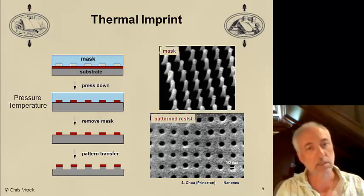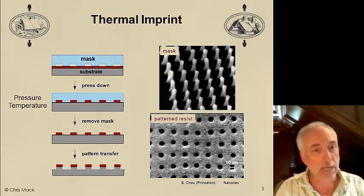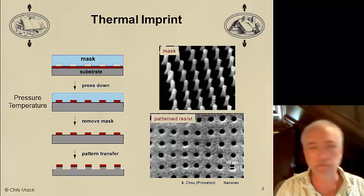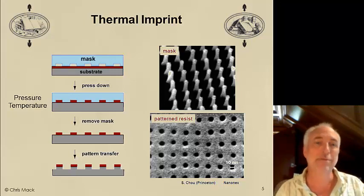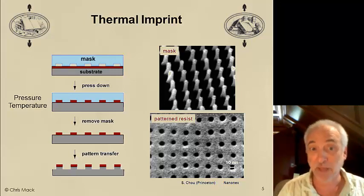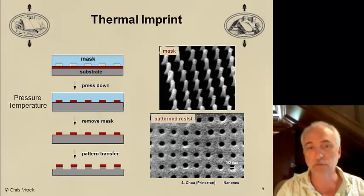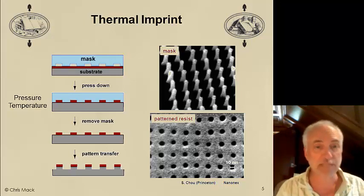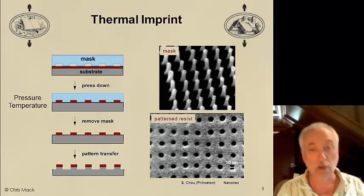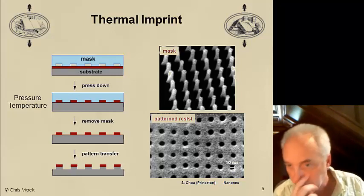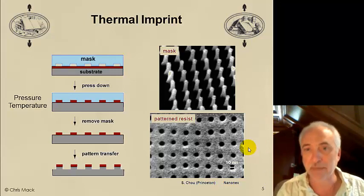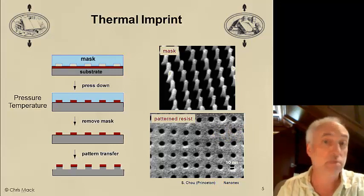The various variables of interest are the pressure and the temperature, as well as the material being used. We remove the mask, which can be a difficult thing — one of the problems would be this polymer material sticking to the photomask. So we often use release layers and well-designed materials to ensure that there's no sticking. When we're done, we can transfer that pattern with an etching step into a harder substrate. This is relatively high resolution; here we show some 10 nanometer holes being printed with this thermal imprint process.